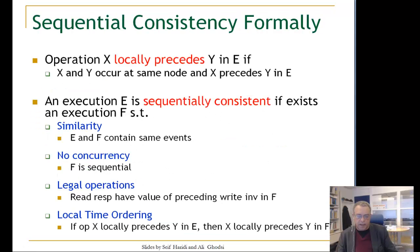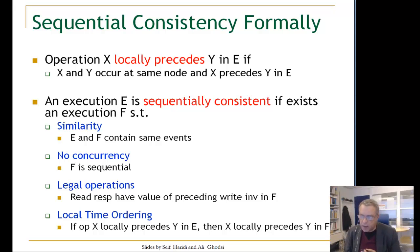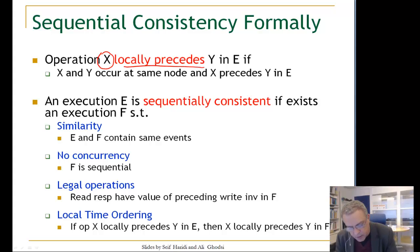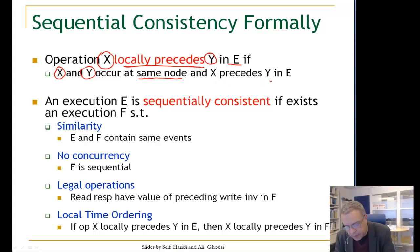That finishes the definition of linearizable executions. Now let us look at sequentially consistent executions. Sequential consistency does not observe a global order; we are interested in observing the local order of execution on each node. We define: operation X locally precedes operation Y in execution E if X and Y occur on the same node and X is before Y in E.